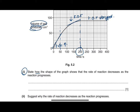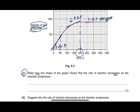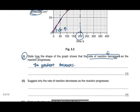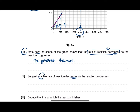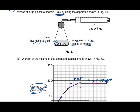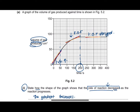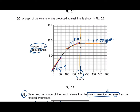The question asks how the shape of the graph shows the rate of reaction decreases as the reaction progresses. You can use the theory of gradient to explain this — the gradient decreases, indicating the rate of reaction has decreased. The reason is that the concentration of hydrochloric acid decreases over time. The H⁺ and Cl⁻ ions react with the marble pieces, and as their concentration falls, the rate of reaction also falls, giving a progressively lower gradient until the HCl is completely used up.